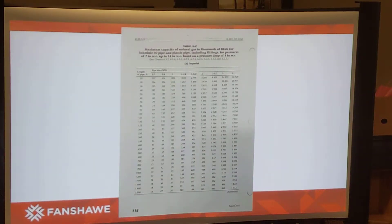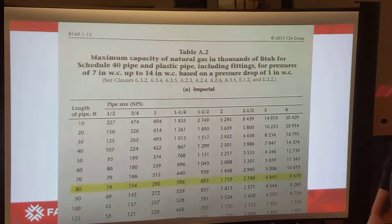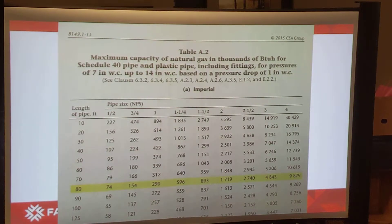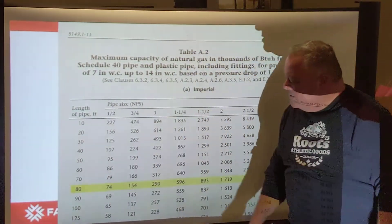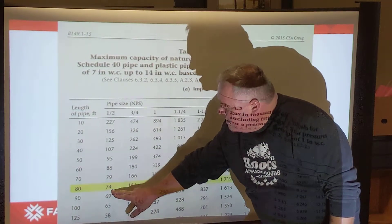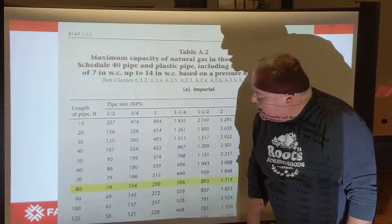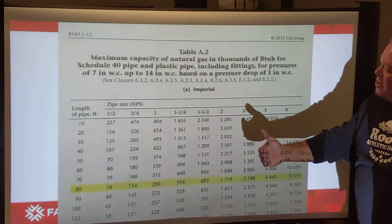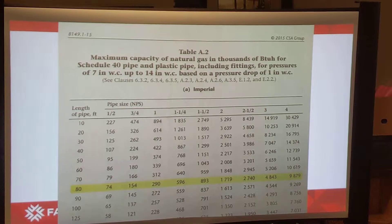The actual table is on page 118 of your B149.1-15 codebook. I've highlighted the 80-foot pipe length section. At the 80-foot code zone, we move across until we find a number of 375 or larger — 596 is the first value larger than 375. Going to the top of that column, we see inch-and-a-quarter is the pipe diameter. Half inch handles 74,000 BTUs, three-quarter handles 154, one inch handles 290, and inch-and-a-quarter handles 596, so we use inch-and-a-quarter for the entire schedule 40 section.